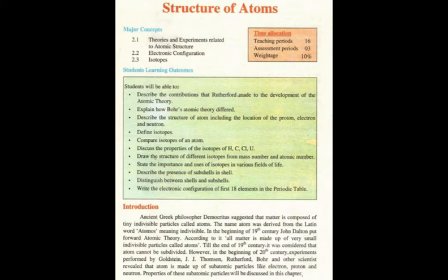For example, the pencil we use is also matter, so a pencil is also made up of tiny particles called atoms. Till the end of the 19th century, it was considered that atoms cannot be subdivided — they are indivisible, they cannot be broken down into smaller particles. That was the concept of atom till the end of the 19th century.